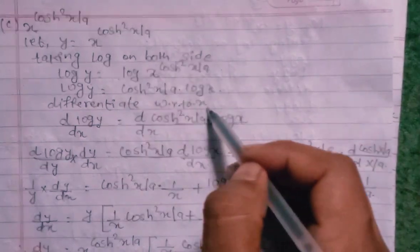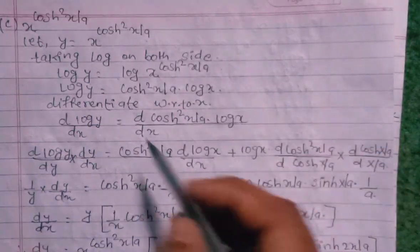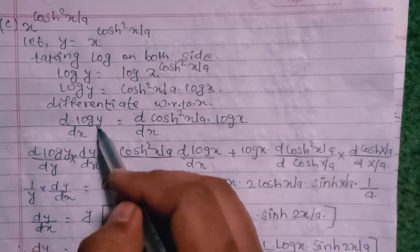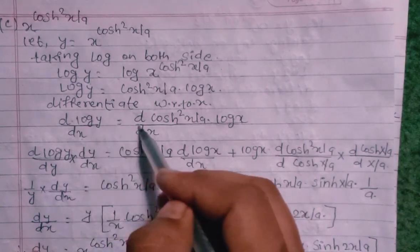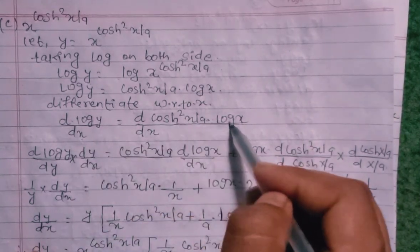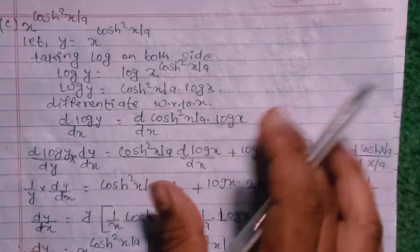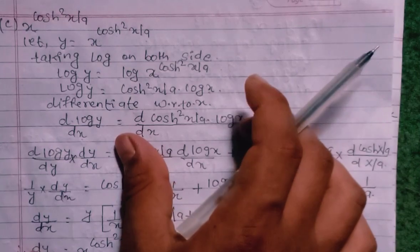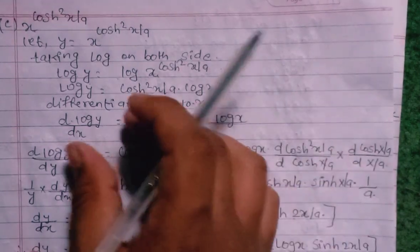So differentiating with respect to x. We differentiate d(log y)/dx equals d/dx of [cos(x/a) into log x]. Here we use the product rule.